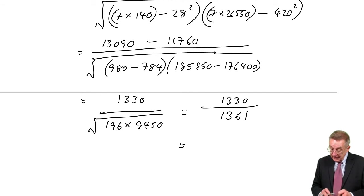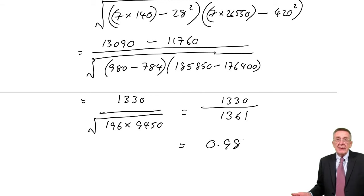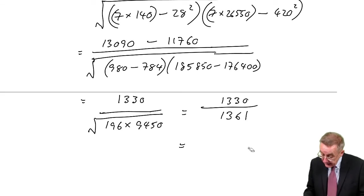So finally, I get 0.98, normally leave this to two decimal places, but I get 0.98.